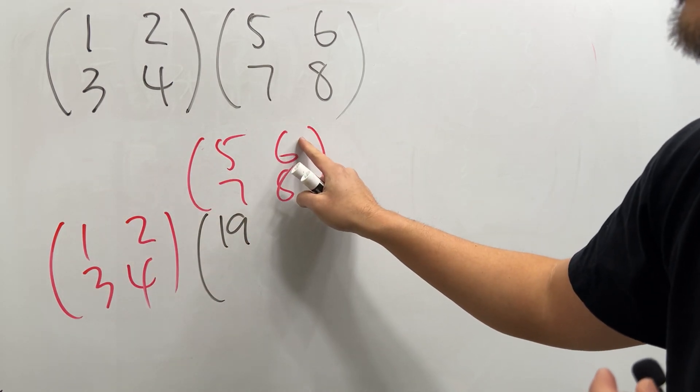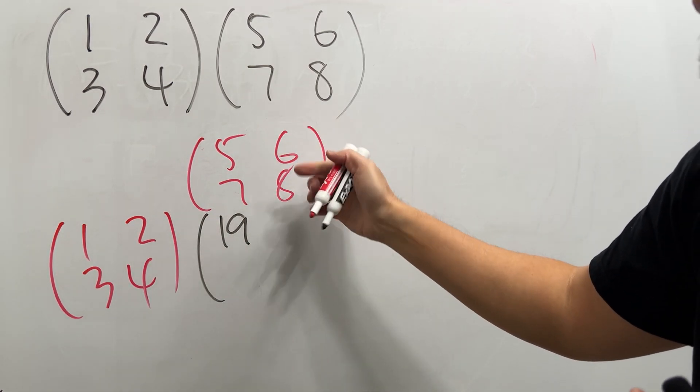Next, 1 times 6 is 6, and then 2 times 8 is 16, and then add them out, you get 22.